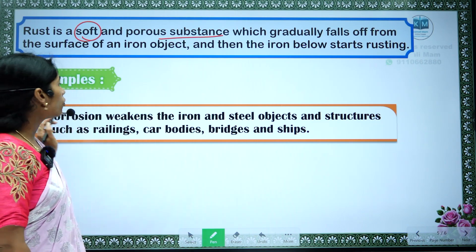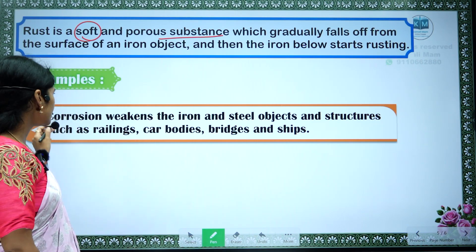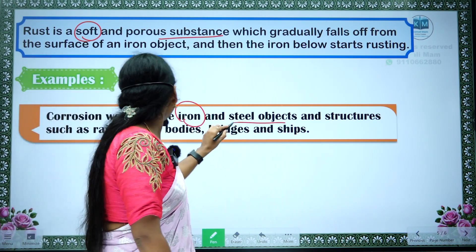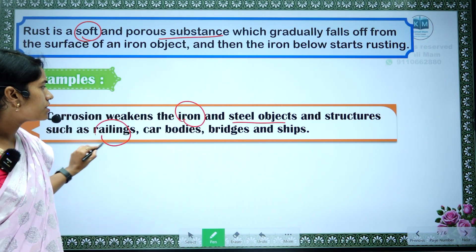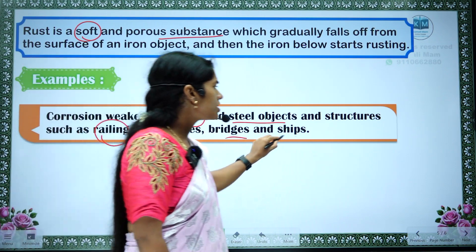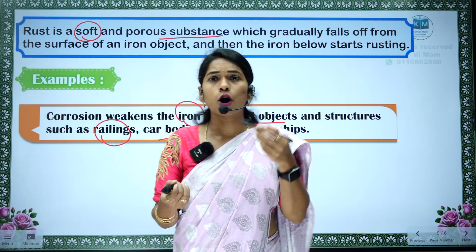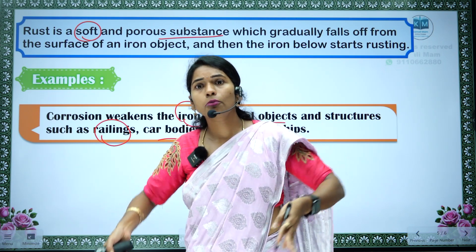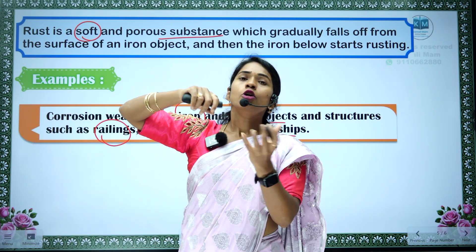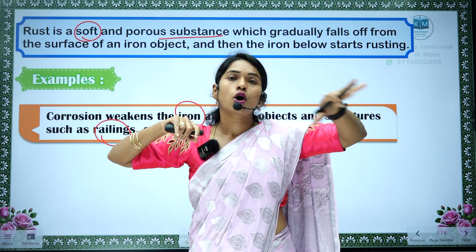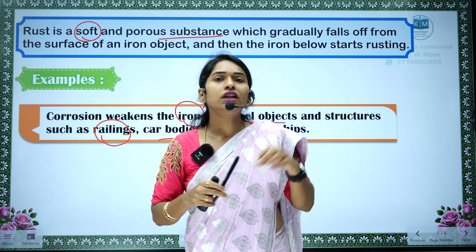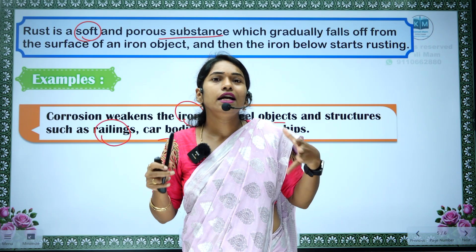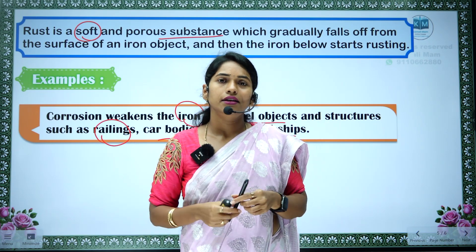Examples of corrosion: we mostly see iron and steel objects, railings, car bodies, bridges, and ships. The lower parts of ships — if the ship goes into the water, that lower part is in contact with water for more time. So rust will be formed and that leads to the loss of iron.